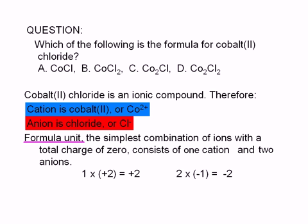To write the formula for an ionic compound, we determine the simplest combination of ions with a total charge of 0. In this case, the simplest combination consists of 1 cation and 2 anions. 1 cobalt(II) cation will have a charge of +2.